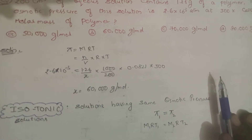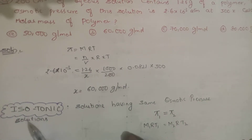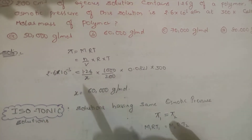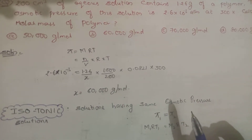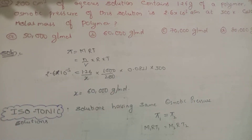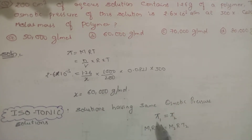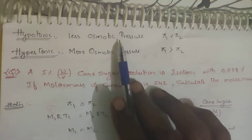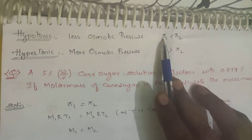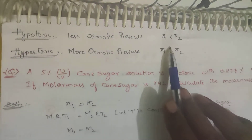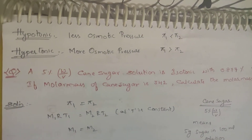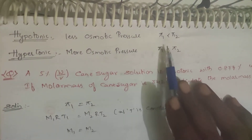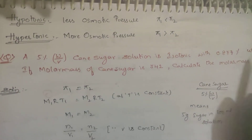This is the same as the ideal gas equation formula. Now, some important terms: isotonic — ISO means same, tonic means concentration. If two solutions have the same concentration (same osmotic pressure), they are called isotonic solutions: π₁ = π₂, i.e., M₁RT₁ = M₂RT₂. Hypotonic means a solution with less osmotic pressure; hypertonic means a solution with more osmotic pressure.